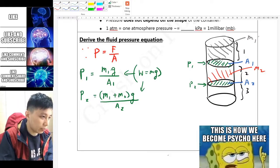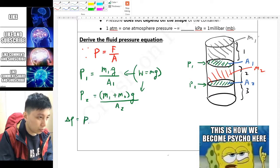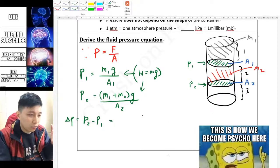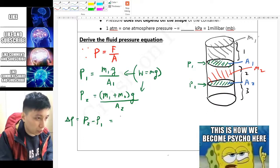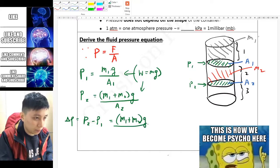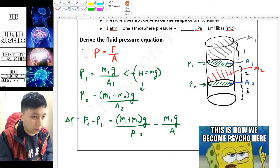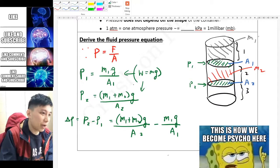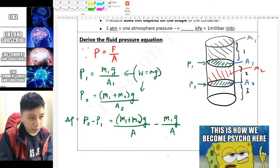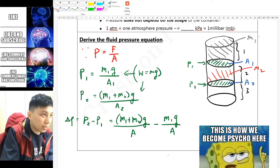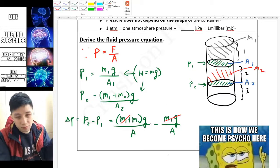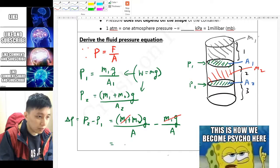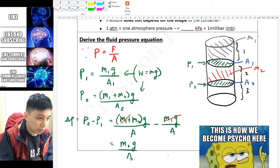And if you look at that then you'll find out, hey, actually the M1g over A will cancel. Okay, if you don't see that let me show you. So we'll have P2 and then P1, and the area is in fact the same so I'll just erase the 1 and 2 because they are both A actually. And then you can see that the M1g appears on both sides so they will cancel because there's a minus here, eventually leaving you with M2g over A and that is delta P.